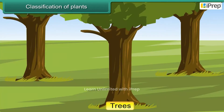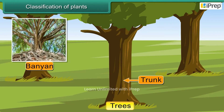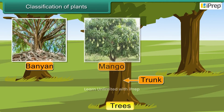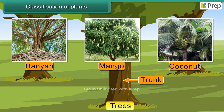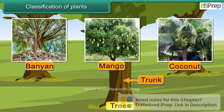Trees are big and tall plants. They have very thick and hard stems called the trunk. Banyan, mango, and coconut are a few examples.